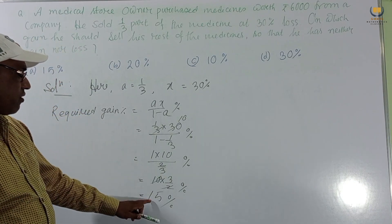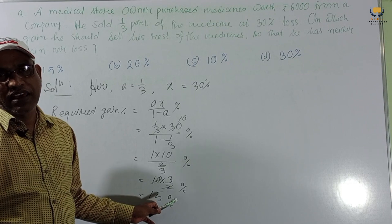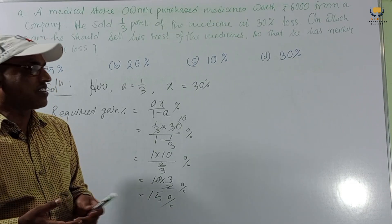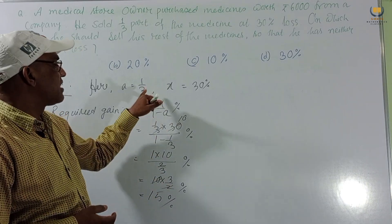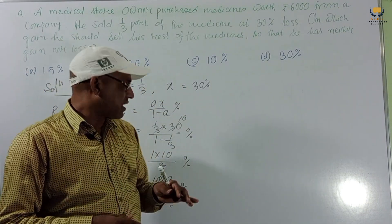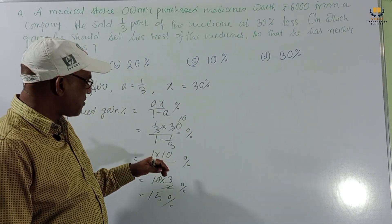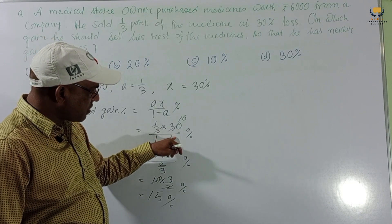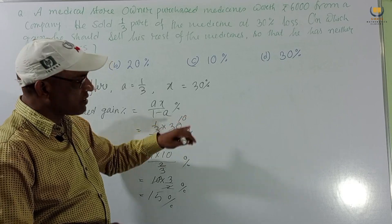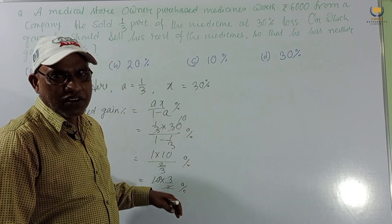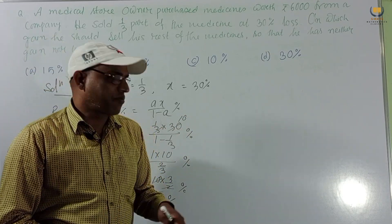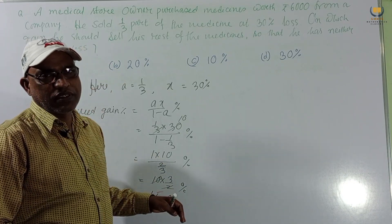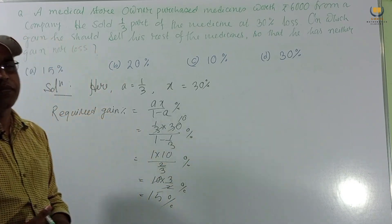So the remaining medicine should be sold at a gain of 15 percent, and then there will be neither loss nor gain. Using this formula, we can easily solve this. With practice, we can do the calculation as a shortcut.